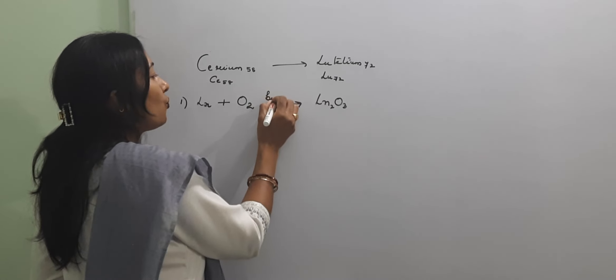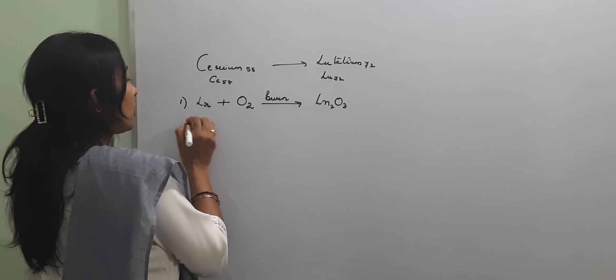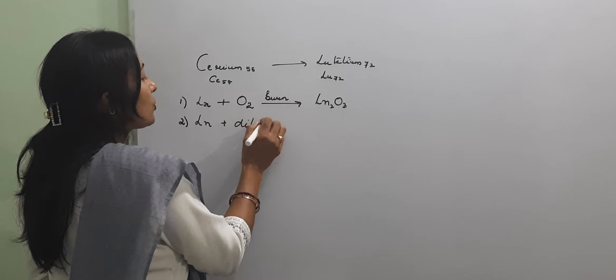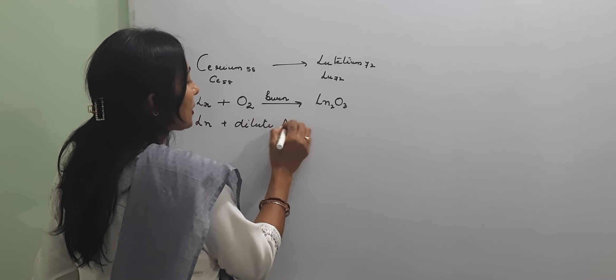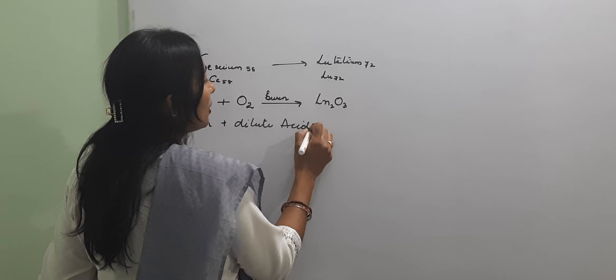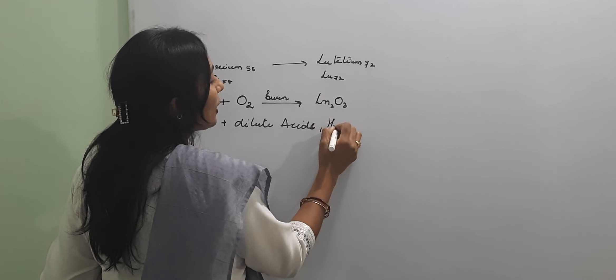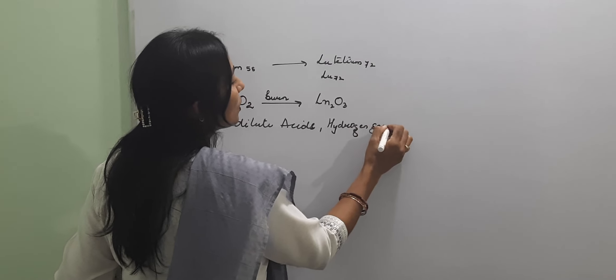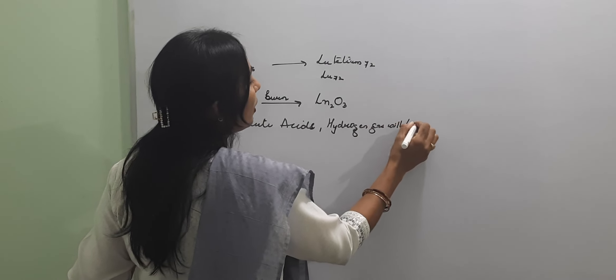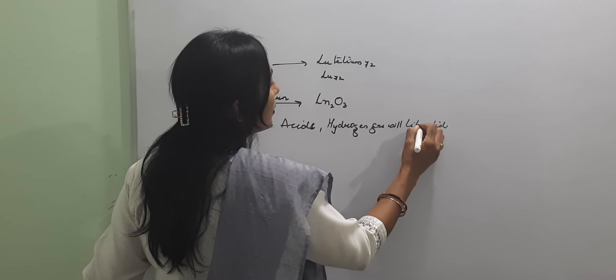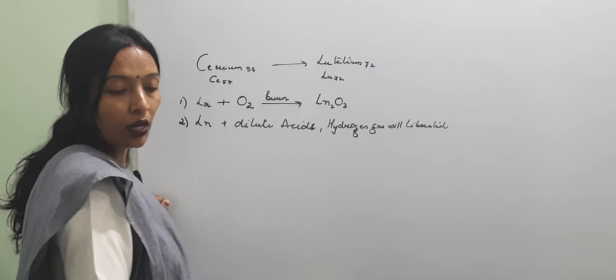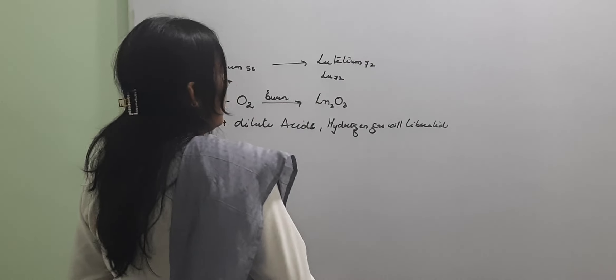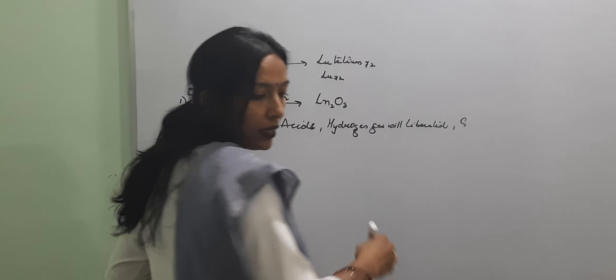If we treat lanthanides with dilute acids, then hydrogen gas will liberate and we are having a salt formed. We are getting the salt plus hydrogen gas will come out.